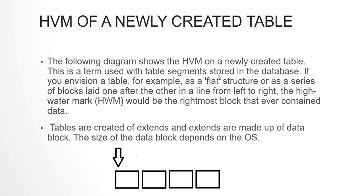As the diagram shows, a newly created table doesn't contain any data, so the HWM is set to zero. As more and more data is filled into the table, the HWM would move to the right. Tables are created of extents, and extents are made up of data blocks. The size of a data block depends on the OS configuration.